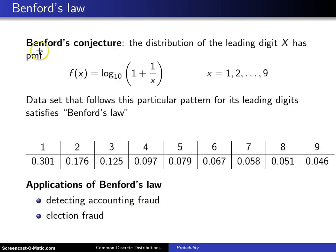He then conjectured, drawing the same conclusion as Newcomb, that the distribution of the leading digit X has a probability mass function f(x) = log₁₀(1 + 1/x) for x = 1, 2, ..., 9.